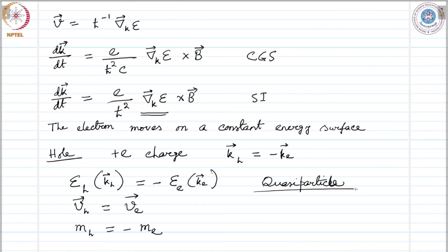We often represent electrons also as quasiparticles when discussing band structure — an electron under a weak potential is represented as if it were a free particle, and in that situation we assign it an effective mass so that free electron theory can be applied. That electron is therefore also a quasiparticle. This brings us to the concept of effective mass.